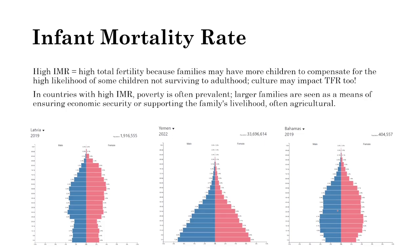In countries with high infant mortality rates, there's worse healthcare and high poverty — people can't afford health facilities. Larger families are often seen as a means of ensuring economic security or supporting the family's livelihood, which is often agriculture. Children, particularly male children, can be seen as a form of labor on a farm to ensure the family has food and income.